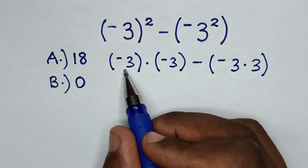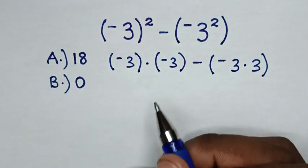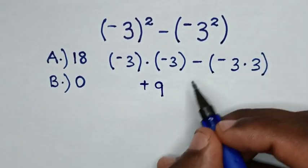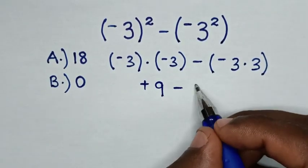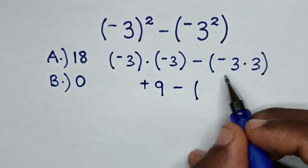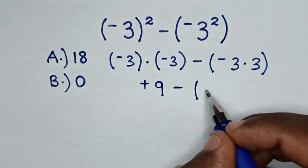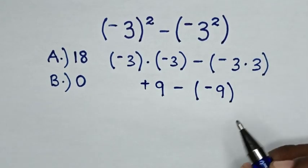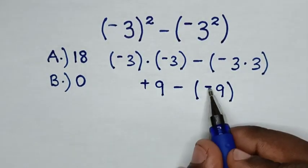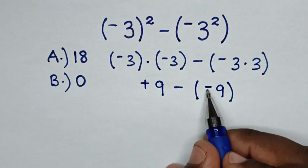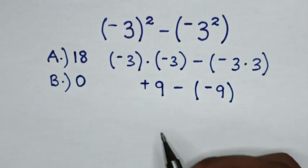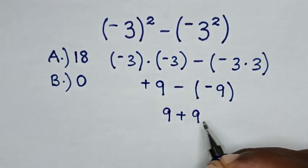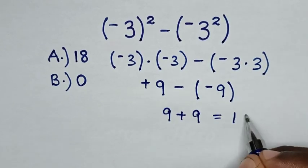So, negative 3 times negative 3 is positive 9, then minus bracket negative 3 times 3 is negative 9. Then, to open the bracket, negative and negative becomes positive. So, that will be 9 plus 9 which is equal to 18.